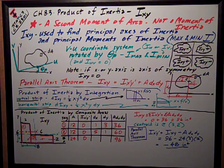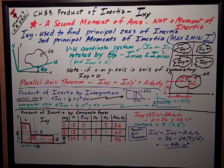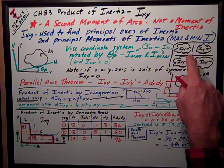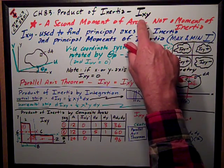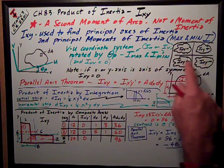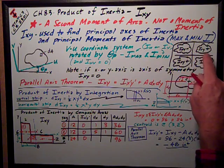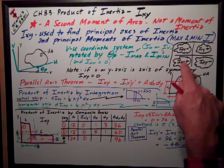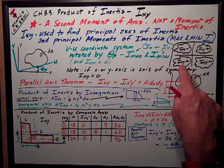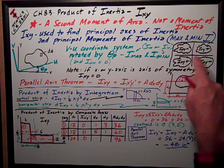Okay, there are a couple interesting things about product of inertia that we're going to use to help us solve problems. First, that's the fact that due to it being the second moment of area multiplied by X and Y, if the entire area lies in the first or third quadrant, where both X and Y are positive or both X and Y are negative, then IXY is positive.